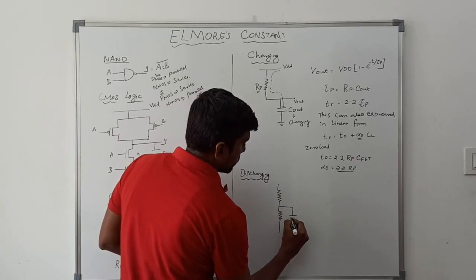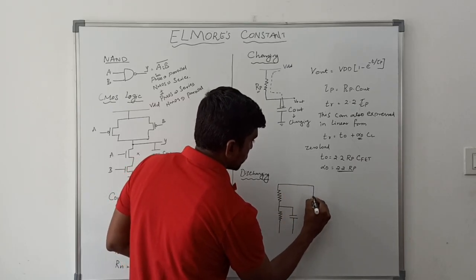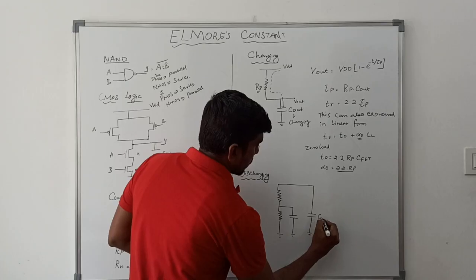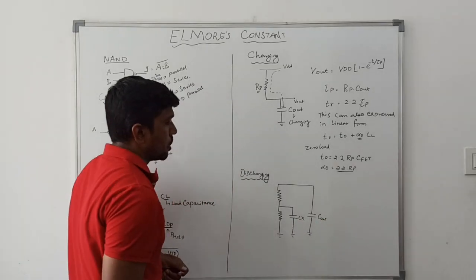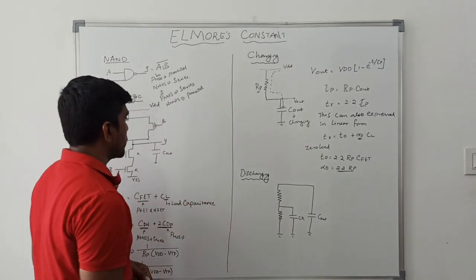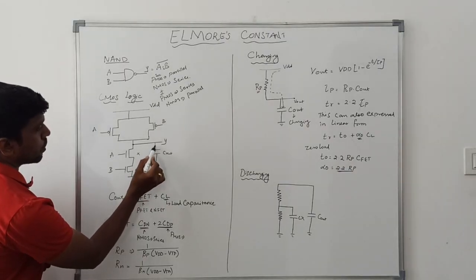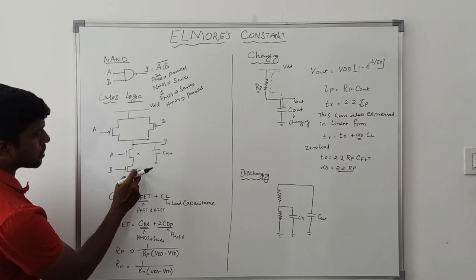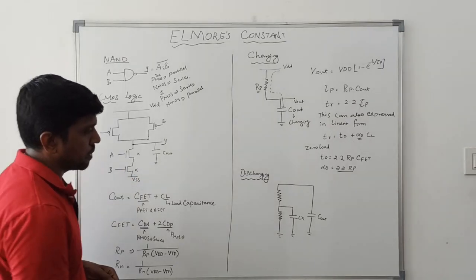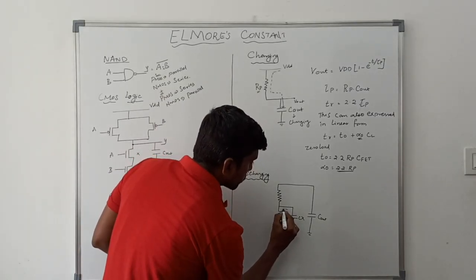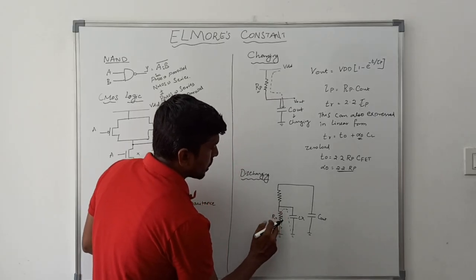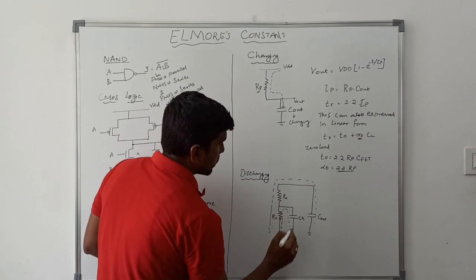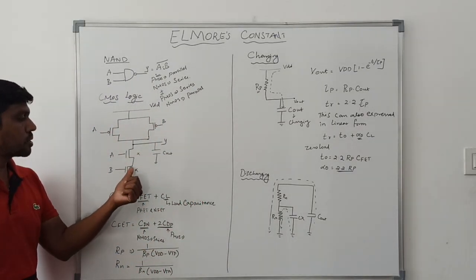When the pull-up network turns off, the pull-down network turns on. In this diagram we have two capacitors: one called Cout and another called Cx. There are two possibilities for discharging: Cout discharges to ground, and the B transistor also has a capacitance Cx that discharges through the B transistor. So Cx discharges through the B transistor alone, while Cout discharges through both NMOS transistors, since the two NMOS transistors in the pull-down network are connected in series.